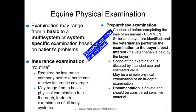For horses, the physical examination can range from a basic multi-system or system-specific examination based on the patient's problems. We can do a well visit or a sick visit examination, or we might be doing an insurance examination, which could be routine — required by the insurance company before a horse can receive coverage. That can range from a basic physical examination to a thorough in-depth examination of all body systems.